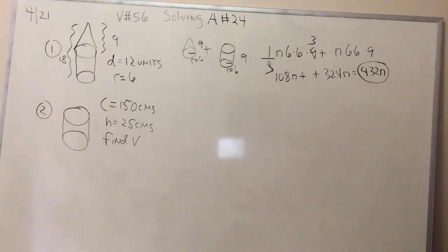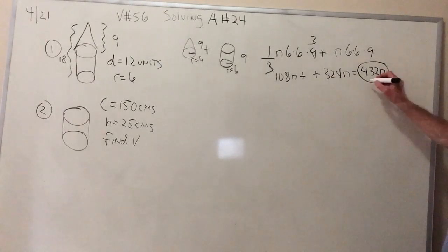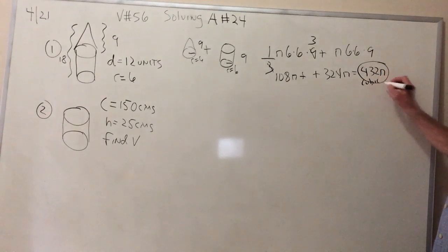And when you add up 108 plus 324, because they're like terms, you end up here with 432 pi. That's the correct answer. That's been vetted. So that takes care of the first one. Cubic. It's important to keep that in the back of your heads. Units.